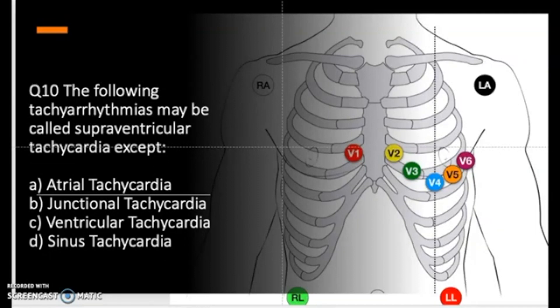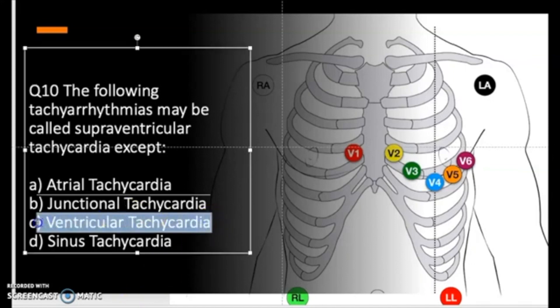Question ten — the last question: the following tachyarrhythmias may be called supraventricular tachycardia, EXCEPT. The correct answer is ventricular tachycardia. That is the correct answer for this question, and I've bolded it for you.